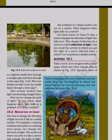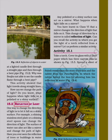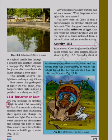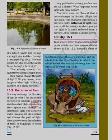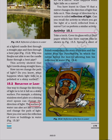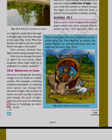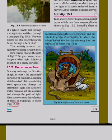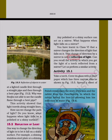How can we change the path of light? Do you know what happens when light falls on a polished or a shiny surface? 15.2 Reflection of light. One way to change the direction of light is to let it fall on a shiny surface. For example, a shining stainless steel plate or a shining steel spoon can change the direction of light. The surface of water can also act like a mirror and change the path of light. Any polished or shiny surface can act as a mirror. A mirror changes the direction of light that falls on it. This change of direction by a mirror is called reflection of light.